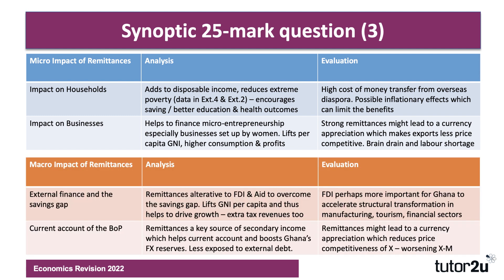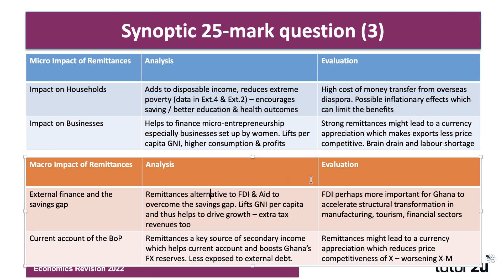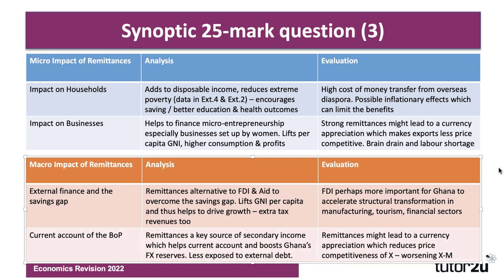On the macro side, you might bring in the concept of the savings gap — remittances are an alternative to FDI and aid to overcome the savings gap. This means Ghana is less reliant on aid and on private debt and equity flows. Remittances lift per capita incomes, helping to drive growth through consumption, and the Ghanaian government will also generate more tax revenues as a result.